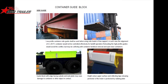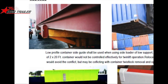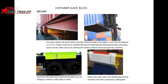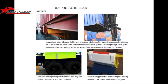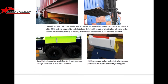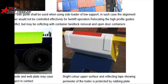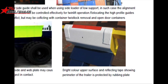We can see other factories making a smaller container guide, which cannot ensure the two containers are in one line, causing problems during operation. We also put a reflector on the edge of our container blocks to show the key crane drivers exactly where they should place the container.